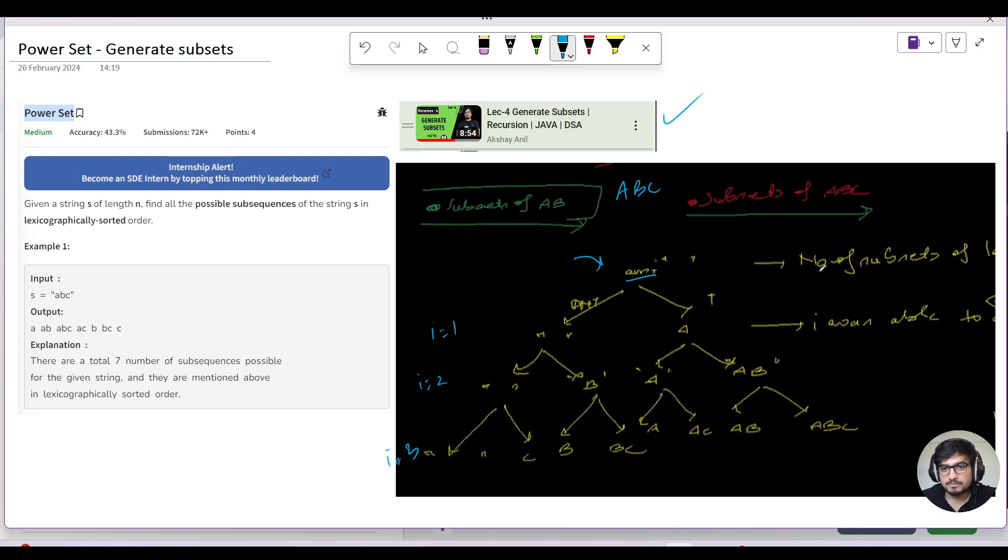For the empty string, if we don't consider anything (the not take branch), the empty string will be passed in the left recursive branch. On the right hand side, we have taken i equals to 1, meaning we are considering the first character, which is 'a'.